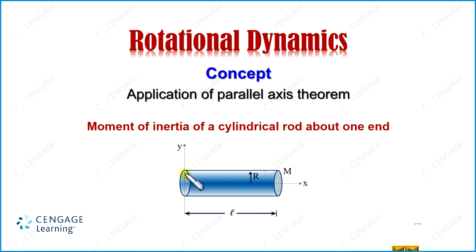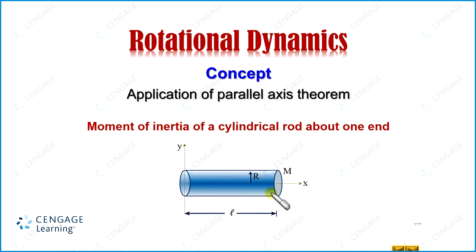We are interested to calculate the moment of inertia about the y-axis. We know the moment of inertia of this cylinder about the x-axis is mr²/2, which is the same as the moment of inertia of an equal-mass disc of equal radius. The moment of inertia of a disc about the symmetrical axis passing through the centre perpendicular to the plane equals mr²/2, which is the same as the moment of inertia of this cylinder about the x-axis.